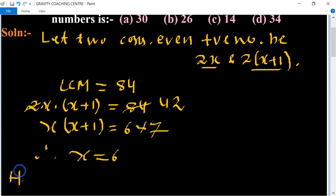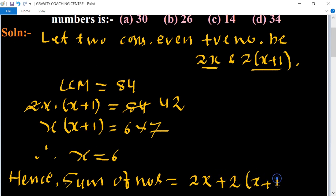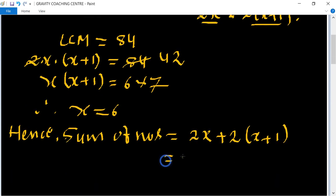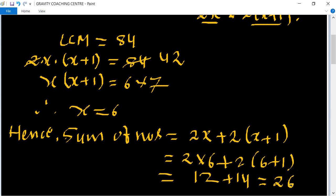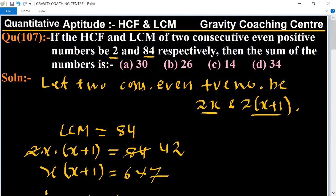Hence, the sum of the numbers is 2x plus 2(x+1). Now we put the value of x equal to 6: 2(6) + 2(6+1) equals 12 plus 14, so 26, which is the required answer. Option B is the correct answer.